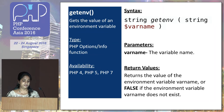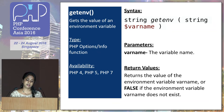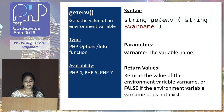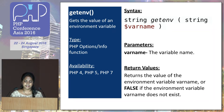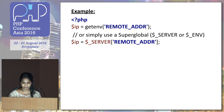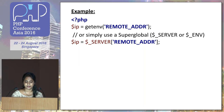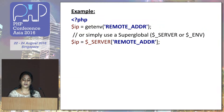Next is getenv. Getenv is a PHP options/info function used to get the value of an environment variable. It's available in PHP 4, 5, and 7. The parameter is just a variable name. It returns the value of the environment variable, or false if the environment variable doesn't exist. Here's a simple example where I'm fetching the remote address using getenv. Alternatively, you can use a superglobal like $_SERVER or $_ENV — it basically serves the same purpose.